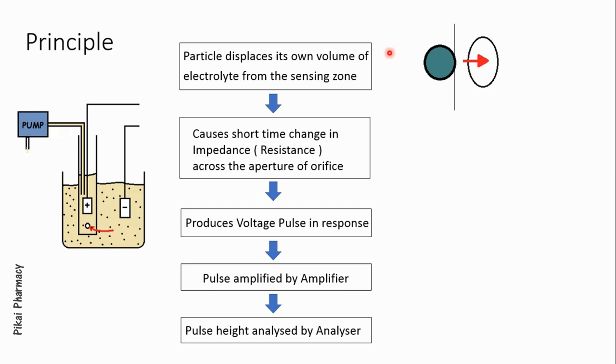It is constructed so well that only one particle can pass through at a time. When a particle enters the orifice, it displaces its own volume of electrolyte, and this causes a short-time change in impedance, or you can also say a short-time change in the resistance across the aperture of this orifice.